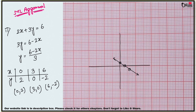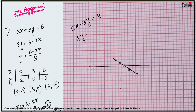To find the slope: rewrite as y = -2/3·x + 2, so the slope m = -2/3 and the y-intercept is 2. For the next sub-question, 2x - 3y = 4: rearrange to 3y = 2x - 4, so y = (2x - 4)/3. Substitute values of x to find y, plot the points, and you will get your straight line.